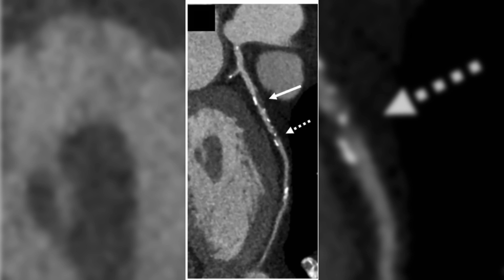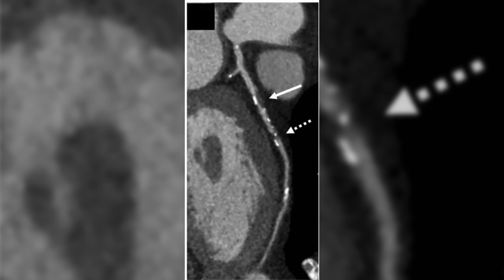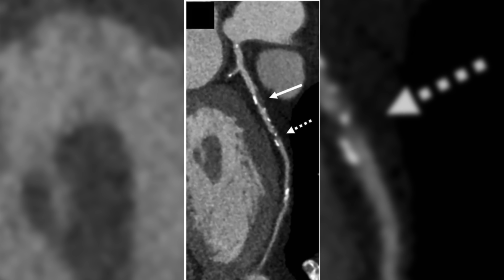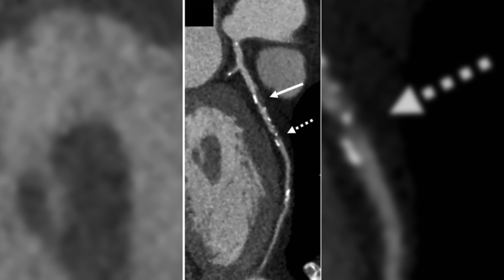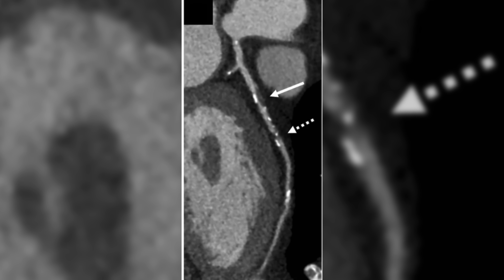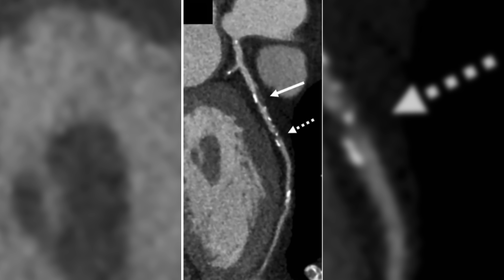Now let's compare the CAC to a CT angiogram. Here you can see much greater detail — being able to visualize the whole artery, not just the calcium in the wall. We can see signs of non-calcified plaque and tell if there's any narrowing within the vessel. All in all, it's a much more detailed evaluation.